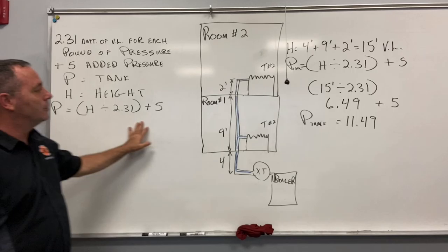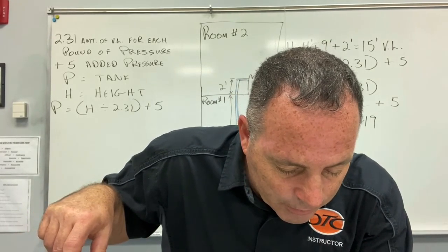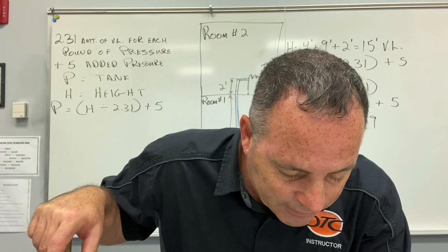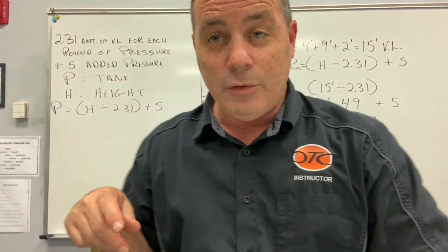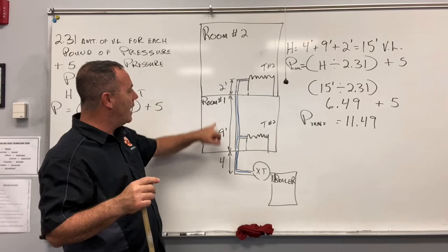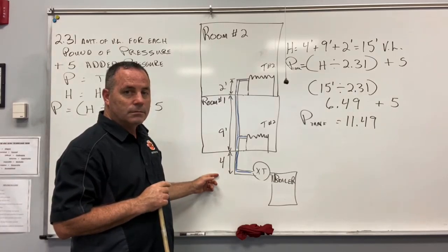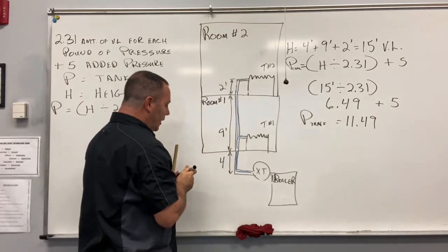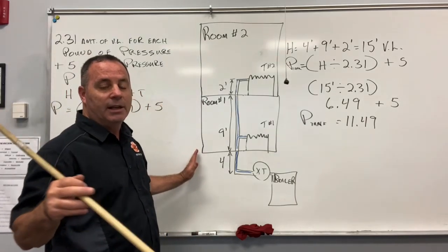The book gives a worked example: the boiler is located in the basement, 4 feet below basement level. The home has two floors with 9-foot ceilings each. The highest pipe is 2 feet above the second-floor ceiling. Terminal unit one is on the first floor and terminal unit two is on the second floor.